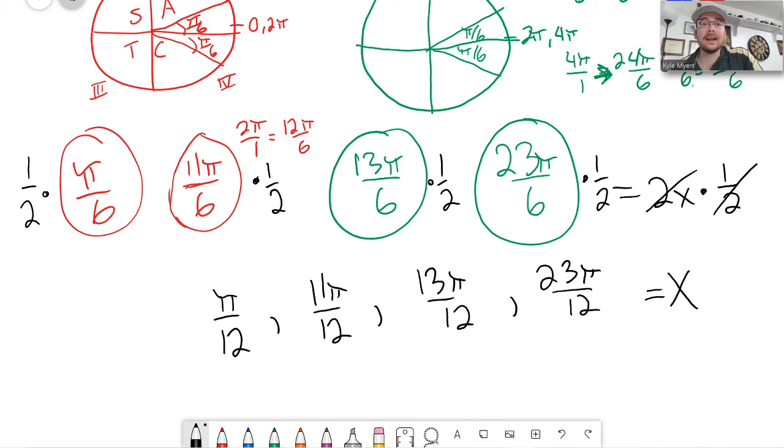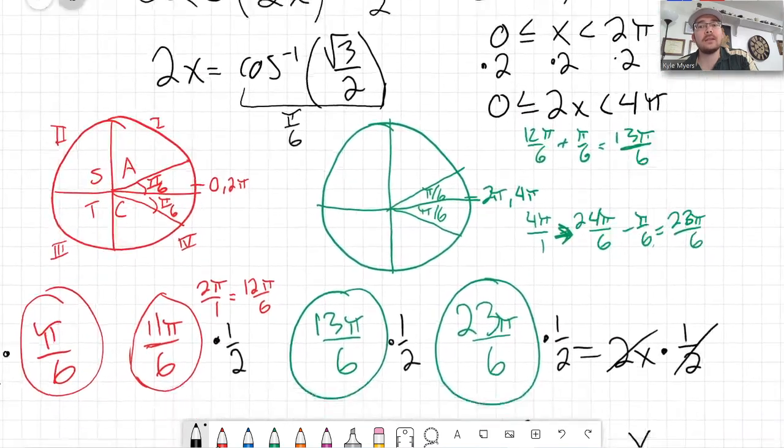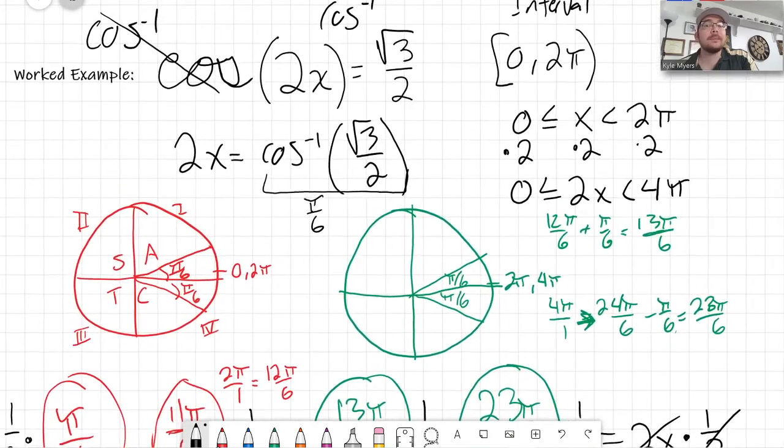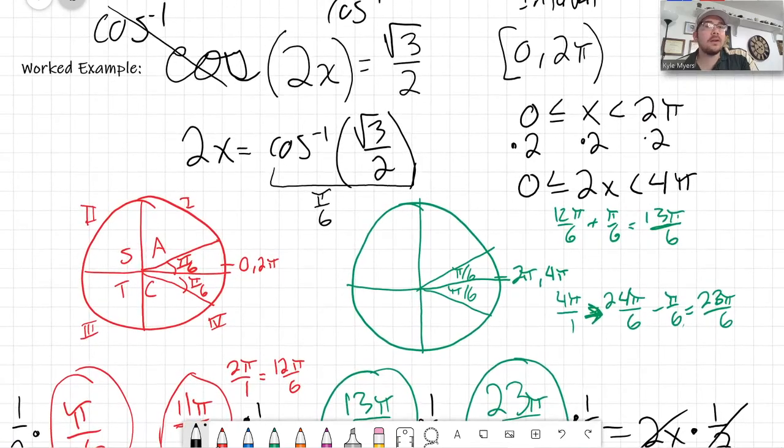So, I have 4 answers because when I look at how many different quadrants have the answer, there's 2 in 1 revolution. But if I have 2 revolutions of a circle, if I have a 2x, I'm going to have twice the amount of answers. If it was cosine 3x, I'd have 3 times the amount of answers that I normally would have.